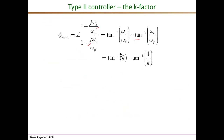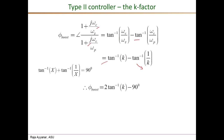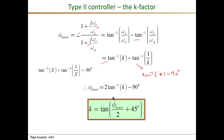Substituting, the phase boost becomes arc tan(K) minus arc tan(1/K). Using the trigonometric identity that arc tan(x) plus arc tan(1/x) equals 90 degrees, we can rewrite minus arc tan(1/K) as arc tan(K) minus 90 degrees. The full expression for phi_boost then becomes 2 arc tan(K) minus 90 degrees.